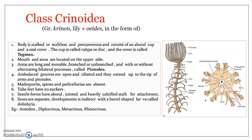Crinoids include around 650 to 700 species of sea lilies and feather stars. Crinoids were once far more numerous than they are today. They differ from all other echinoderms in being attached to a substratum during a substantial period of their life.